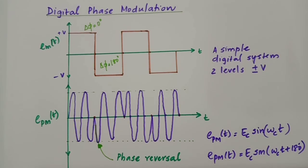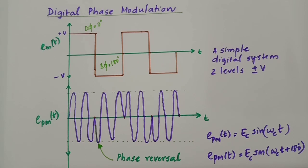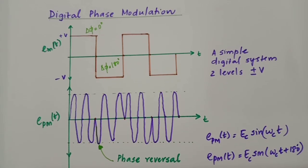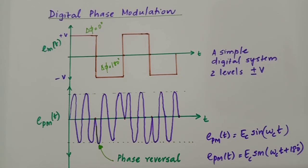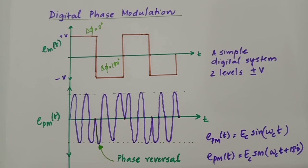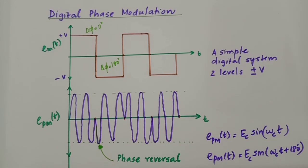In this session, we have defined what is meant by phase shift and how to define phase shift in a signal. We have seen what is sinusoidal phase modulation, its mathematical expression, and that this expression is very similar to that of a frequency modulated wave. We have also seen that if a digital signal is used as the modulating signal, the output is a digital phase modulation. In this simple two-level example, the concept of phase reversal has also been introduced. Thank you.